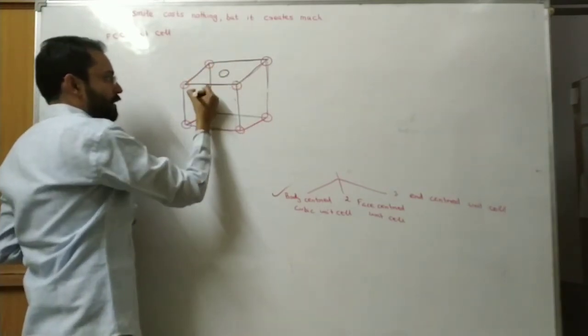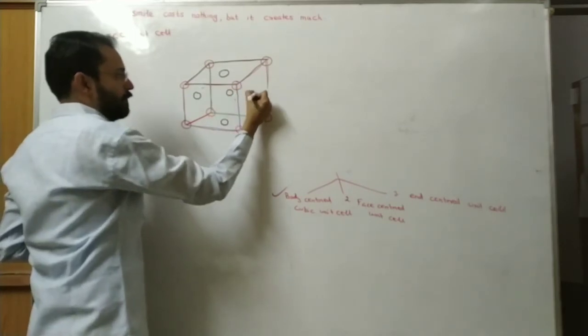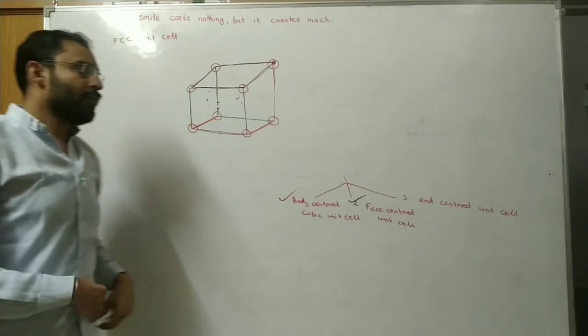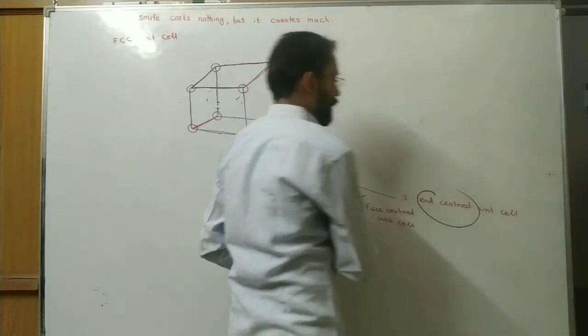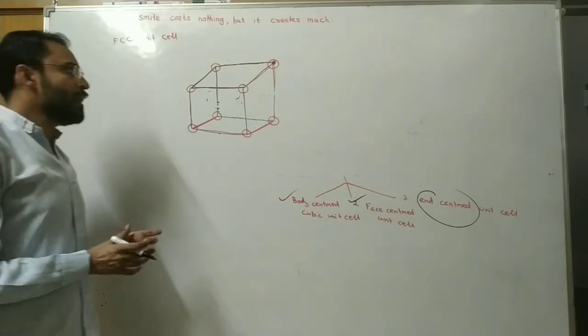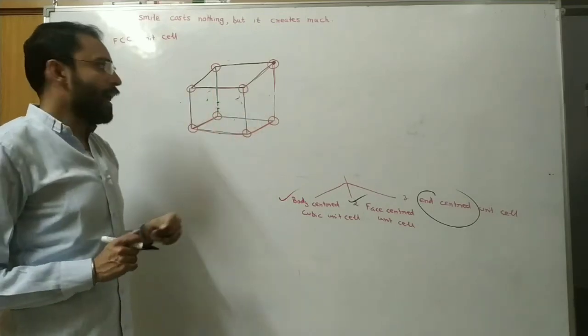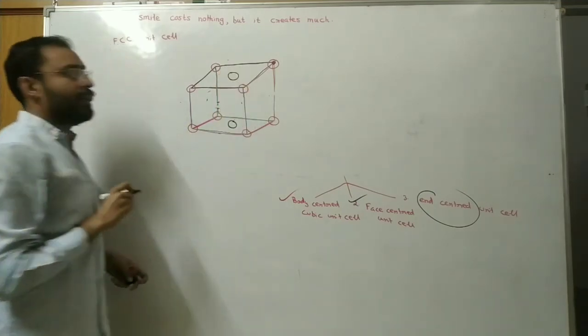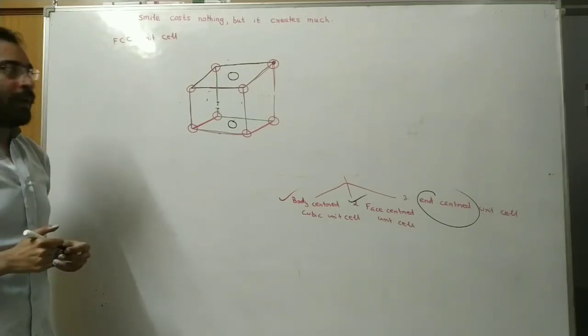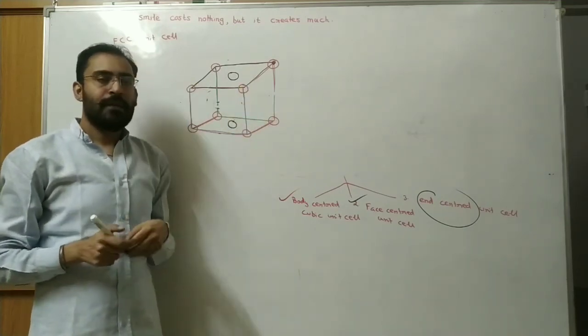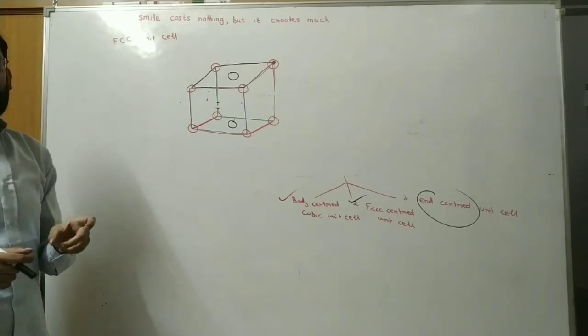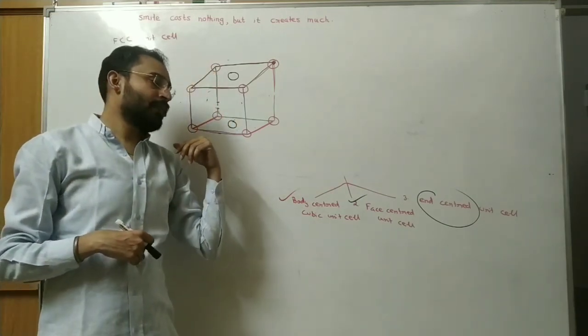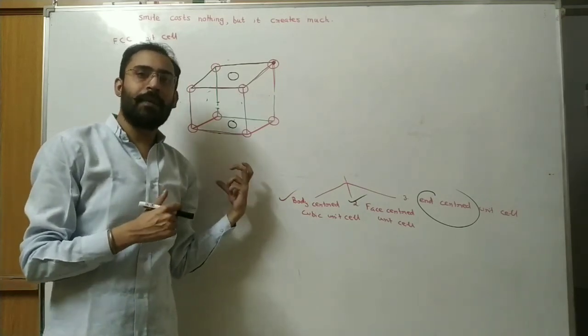The next type of unit cell is end-centered unit cell. In this type of unit cell, constituent particles occupy all the 8 corners as well as centers of any 2 opposite faces. Opposite faces like, if at the front wall center a particle is present, then the second particle is at the opposite back side.